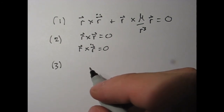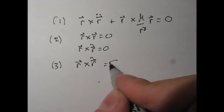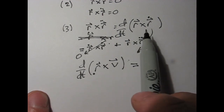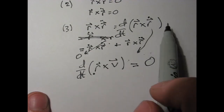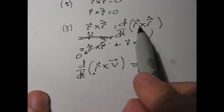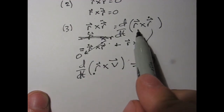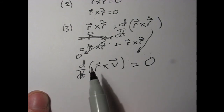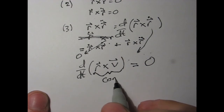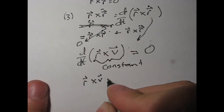Step three: pull a similar trick like we did for mechanical energy, and say that R cross R double dot equals d/dt of R cross R dot, which is v. So the above equation becomes d/dt of R cross v equals zero. And that tells us that R cross v is constant. R cross v equals constant — and this is our angular momentum, h.